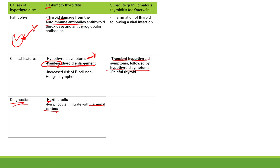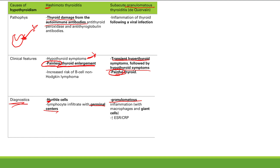Patients also have brisk reflexes. The key differentiator from Hashimoto's — which also presents with hypothyroidism — is that subacute granulomatous thyroiditis has a painful thyroid. Hashimoto's is painless; this one is painful. On histology you see granulomatous inflammation with macrophages and giant cells, as you can tell from the name.